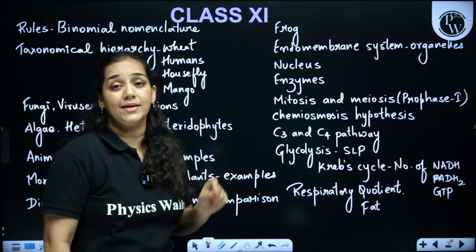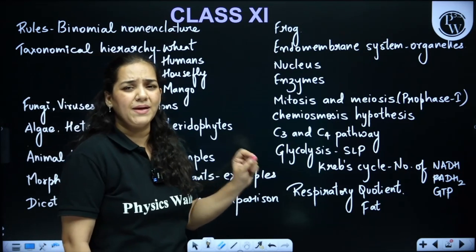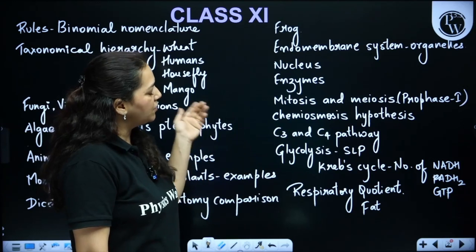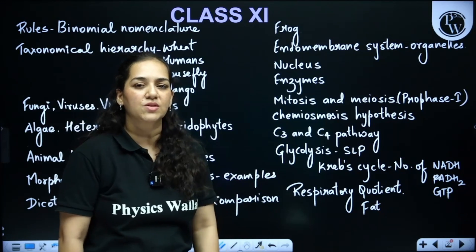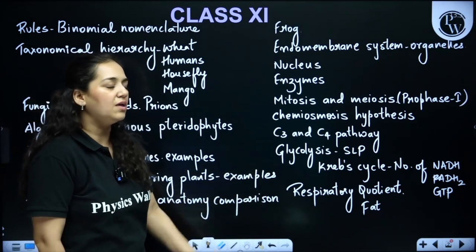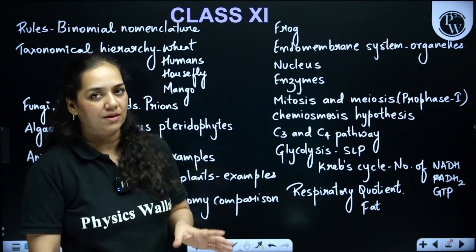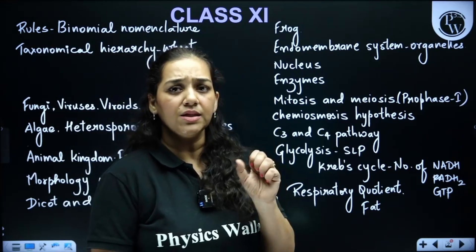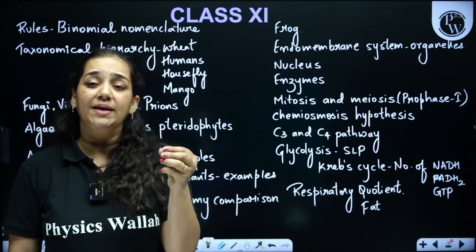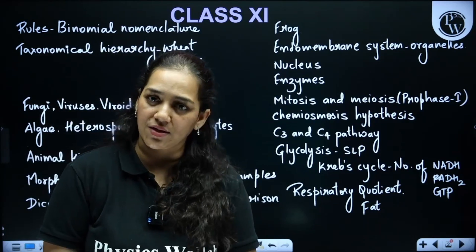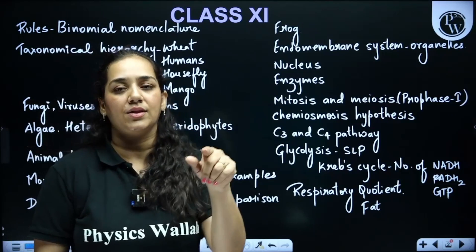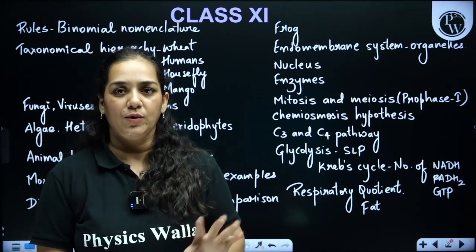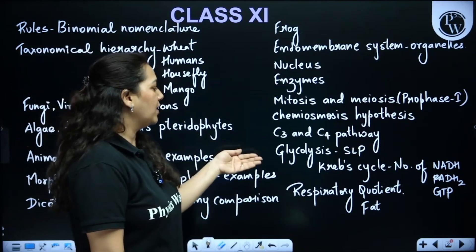In Cell Cycle and Cell Division, mitosis and meiosis are key topics. In meiosis, prophase I and its sub-stages have many repeated questions. In plant physiology under Photosynthesis, the chemiosmosis hypothesis has many questions. The C3 and C4 pathways are asked — examples of C4 plants, and in C3, how many ATP and NADPH are utilized, what product is formed first, and the three steps involved in the C3 pathway.